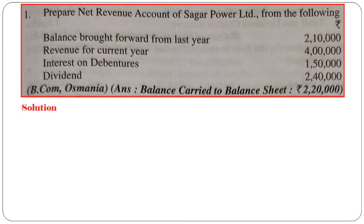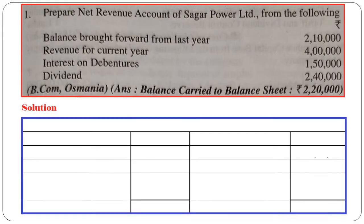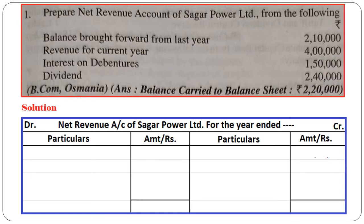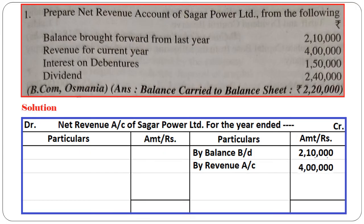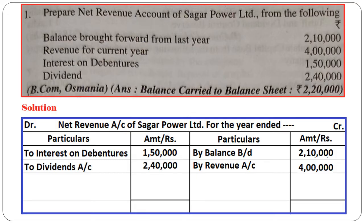For the solution, we draw the format of net revenue account of Sager Power Limited — debit and credit, particulars and amount on each side. Based on the information, balance brought forward from last year is credited: by balance brought down — Rs. 2,10,000. Next, revenue for current year is also credited in net revenue account: by revenue account — Rs. 4,00,000. Interest on debenture is an expense so it is debited: to interest on debentures — Rs. 1,50,000.